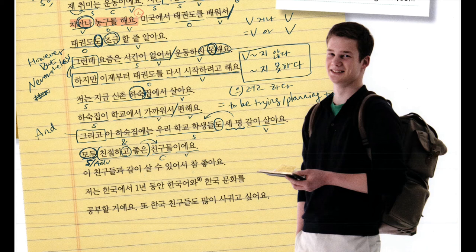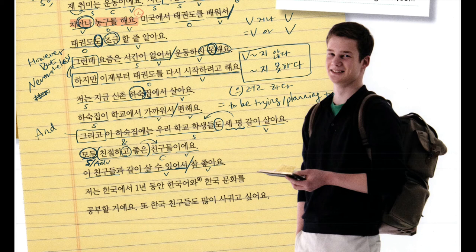이 친구들과 같이 살 수 있어서 참 좋아요. The main clause is 참 좋아요 — I feel really good. Why? Because, with a hidden subject, I can live together with these friends. 살 수 있다 — 을 수 있다 means 'can,' 'you can.'